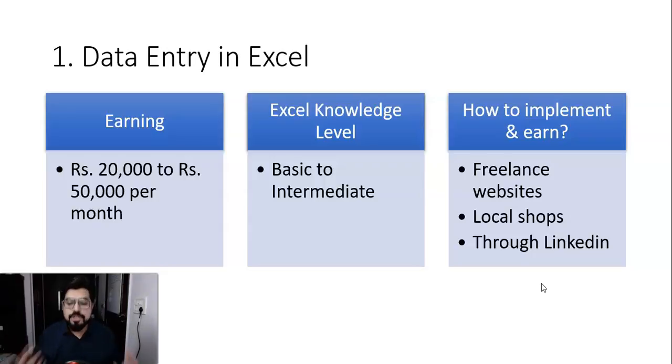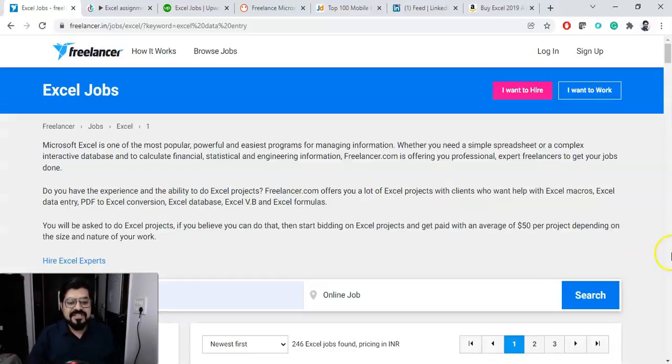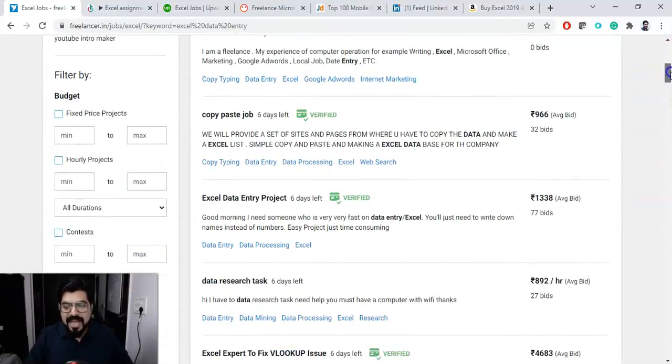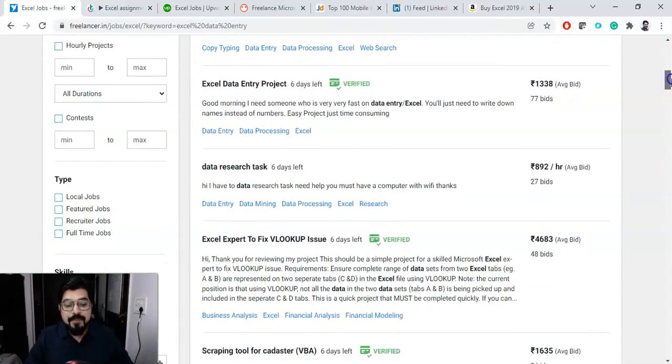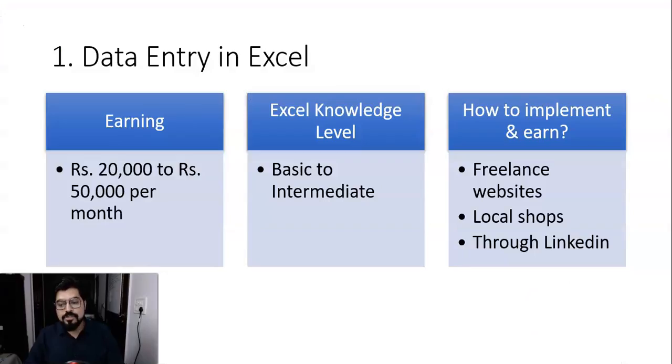So the way to implement it and start earning is actually reaching out to the freelance websites. I'll talk about that in a minute. Also, you can reach out to the local shops and you can also get this kind of project from LinkedIn. Let me show you something. When I go to the browser and if I search for freelancer.com and search for Excel data entry jobs, can you see Excel data entry? And I can clearly see that there are many jobs which are coming. You can apply for these jobs and get good amount being paid. So that's one way to do. Also, you can reach out to the local shops. I'll talk about this local shop and LinkedIn in a minute.